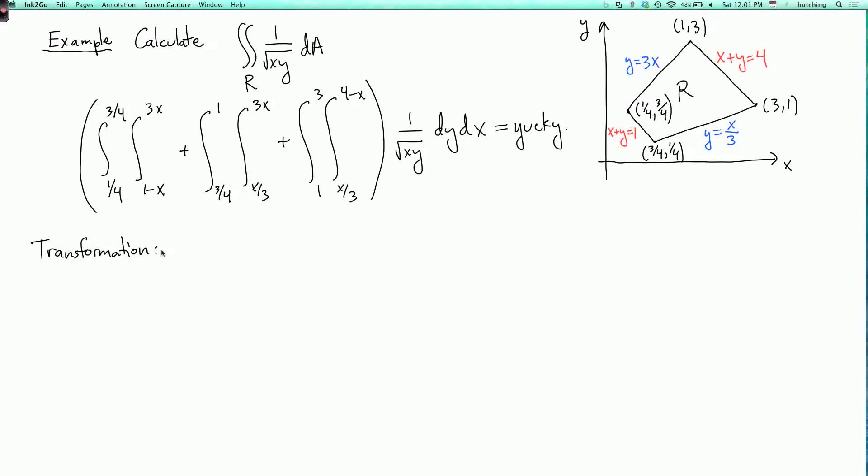And what I'm going to do is I'm going to take x equals u squared and y equals v squared. Why am I choosing this? Because if I replace x and y by u squared and v squared, then the square root goes away and I have 1 over uv. And I'm hoping that will be nicer.